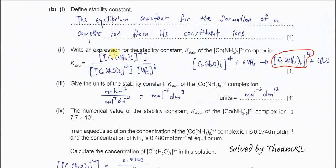So the K stability expression is the concentration of the complex ion formed over the concentration of the constituent ion, which is the hexa aqua cobalt-2, times the concentration of ammonia to the power of six. This is similar to K equilibrium, but we don't include the concentration of water because water is constant. We just use the ligands and the complex ions involved in the reaction.